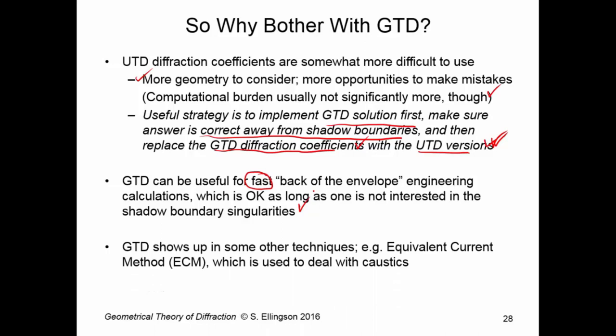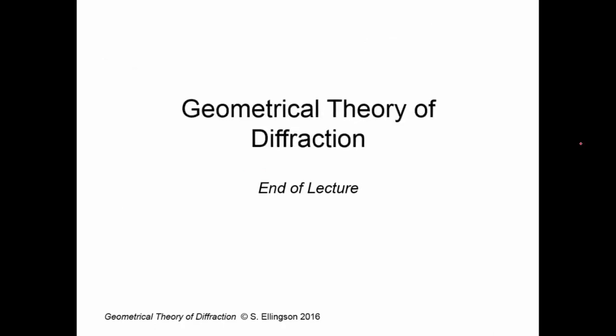A third reason why you should know about GTD, even though it has this limitation around the shadow boundaries, is because GTD shows up in some other techniques. The equivalent current method, for example, which is used to deal with caustics. It turns out that this equivalent current method uses the GTD expression, but it puts it back into an integral and that lets you deal with caustics. Now, I may or may not address this in a future lecture, but just so you know, GTD shows up as a component in other methods. This concludes this lecture on the geometrical theory of diffraction.